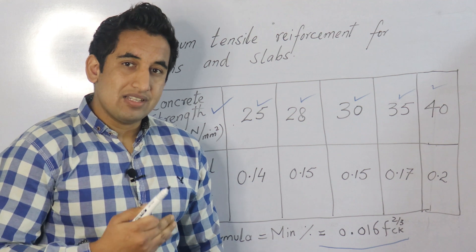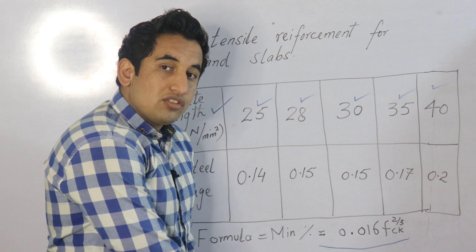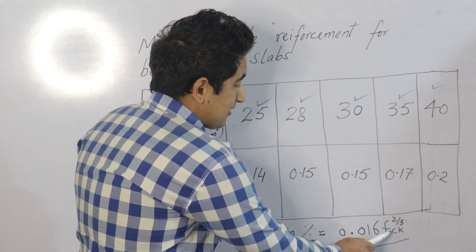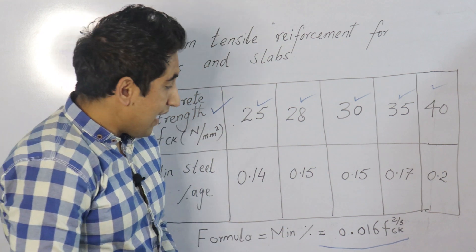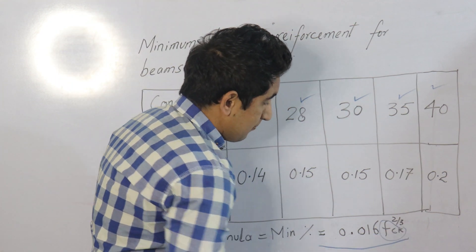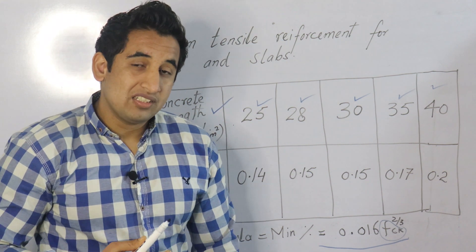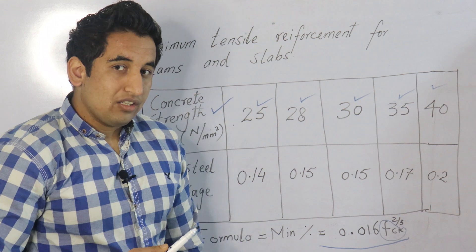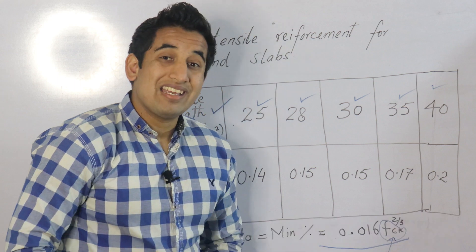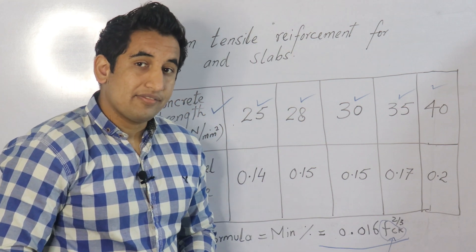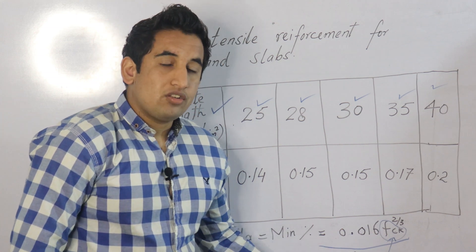The minimum formula of steel is written as 0.016 times fck raised to power 2/3. Fck is actually 28 days compressive strength of concrete. For example, if you are just changing the grades of concrete, you can simply put the value of 28 days compressive strength of that specific grade of concrete and after that you can multiply it to get the minimum percentage of steel.